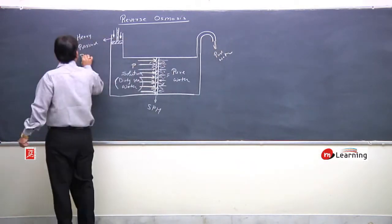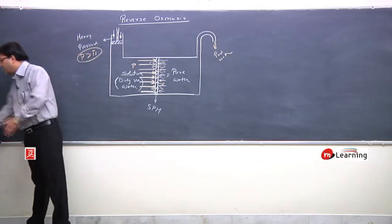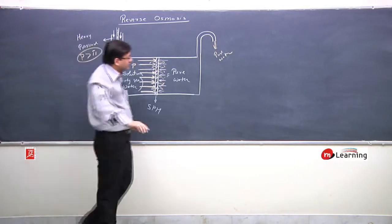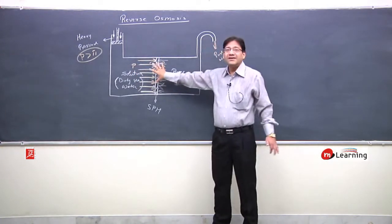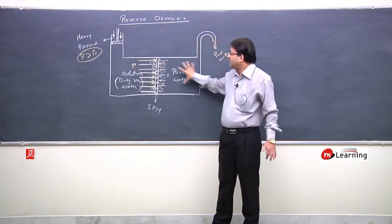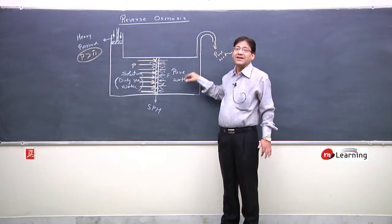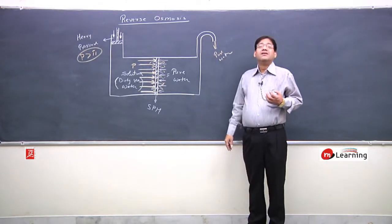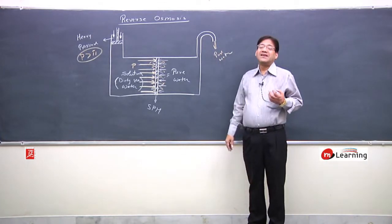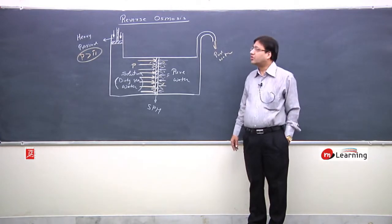This is reverse osmosis. This pressure must be very large as compared to osmotic pressure. Whatever the osmotic pressure is, we need to apply more pressure than that. Then, from this seawater, pure water is obtained in this way. And we can obtain water which is safe for drinking purposes by this method of reverse osmosis.